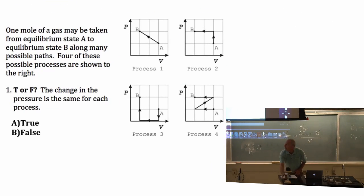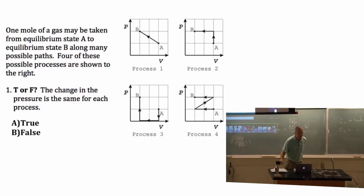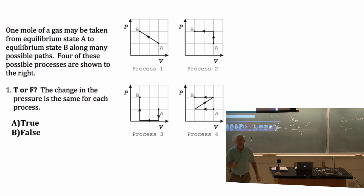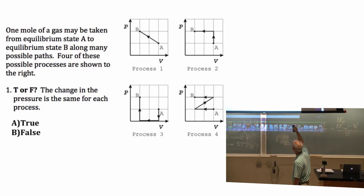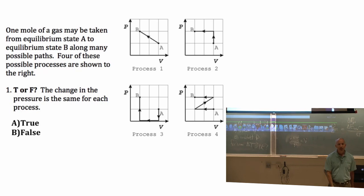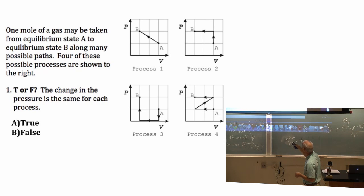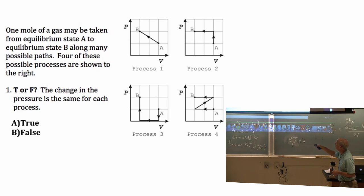Okay, given that I got several questions to ask you. I'll give you a minute apiece. One mole of a gas can be taken from an equilibrium state A to another equilibrium state B. I'm going to do this slowly. So if I draw a line here, it means it was in equilibrium states all the time. Four of these possible processes are shown to the right. So I'm going to give you four ways of getting from A to B. I just sketched them in. True or false? The change in pressure is the same for each process. The change is P final minus P initial.